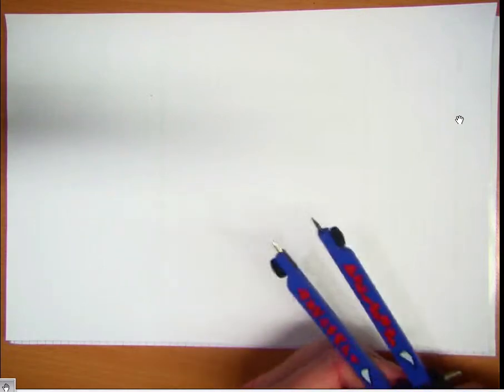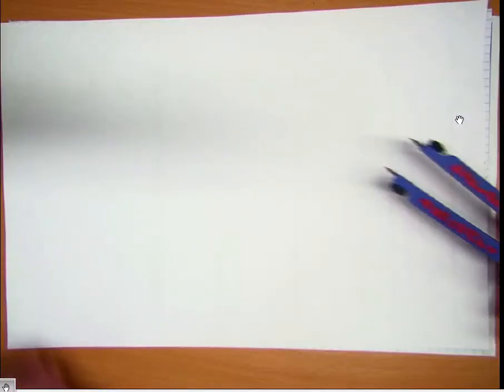Hello, this is Mr. Collier and today we're going to be making a square inside of a circle. I've got a piece of paper here, I've got a pad of paper underneath it so that my compass doesn't slip.